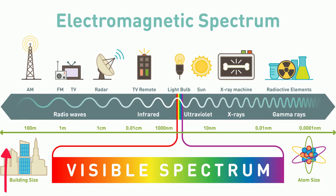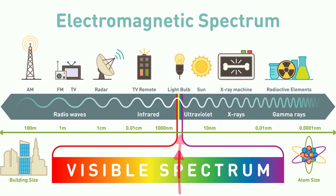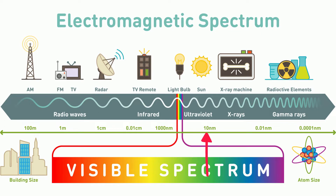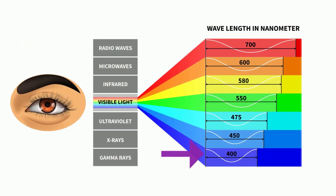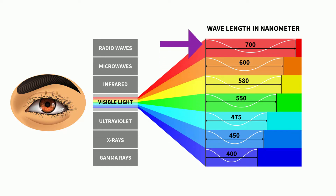Visible light is the narrow range of wavelengths and frequencies found within the electromagnetic spectrum. It is found between infrared waves and ultraviolet waves. Visible light has wavelengths of around 400 and 700 nanometers.